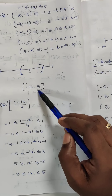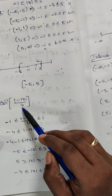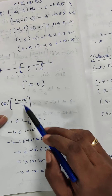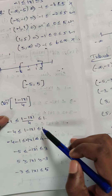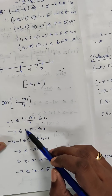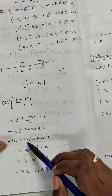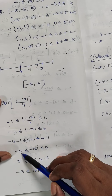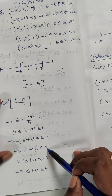The next part is cos inverse of 1 minus mod of x divided by 4. For cos inverse, the domain is minus 1 to 1. So 1 minus mod of x divided by 4 must lie between minus 1 and 1, giving us: minus 4 less than or equal to 1 minus mod of x less than or equal to 4.